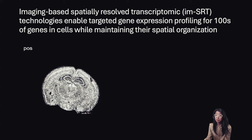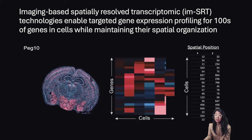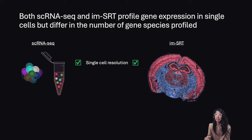More recently, imaging-based spatially resolved transcriptomic technologies are enabling scientists to profile hundreds of targeted gene species within individual single cells while preserving their spatial organization within tissues. As with single-cell sequencing technologies, these imaging-based spatially resolved transcriptomic technologies allow us to measure what genes are being expressed in individual single cells while also keeping track of the spatial positions of these cells to facilitate spatially informed analyses. Since both technologies profile individual single cells, one may be tempted to apply normalization methods previously developed for single-cell RNA sequencing directly to imaging-based spatially resolved transcriptomics data.